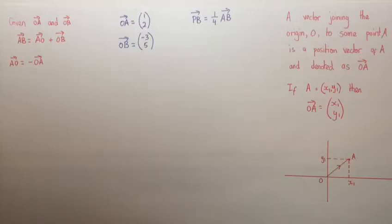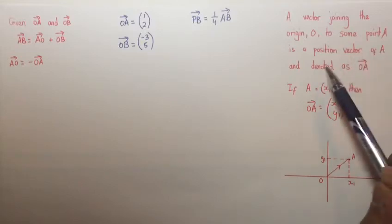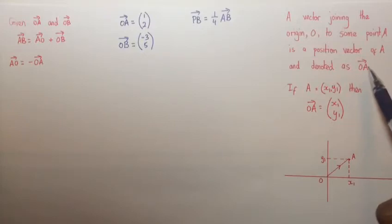This question deals with position vectors. A vector joining the origin O to some point A is called a position vector of A and is denoted as OA as shown here.